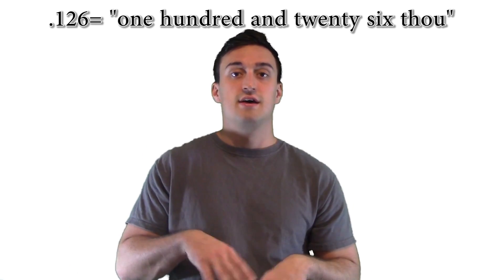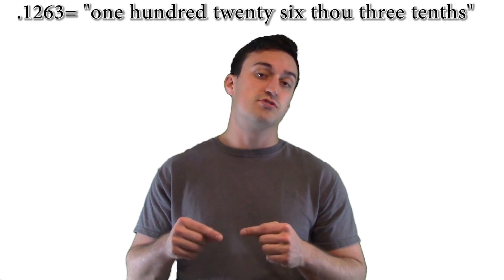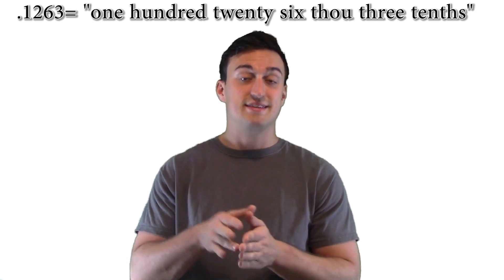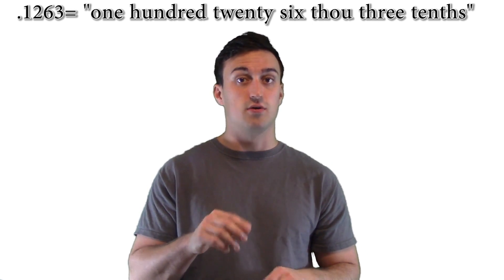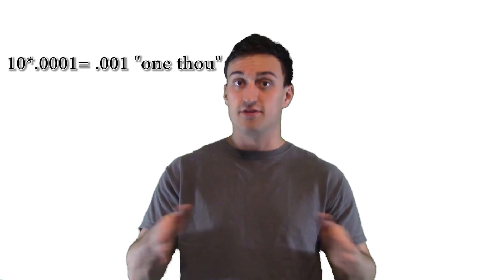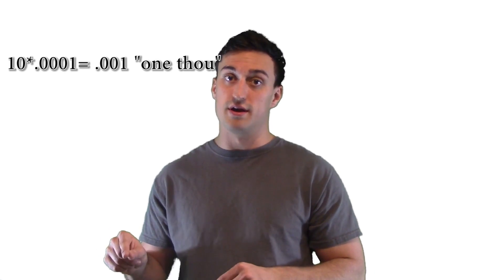Now we're going to learn about tenths. Tenths is the number right after the decimal - .1263 is 126 thou, three tenths. It takes ten of those to equal one thou. So ten .0001s equal .001. You can only go up to .0009, and then it becomes one thou.